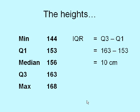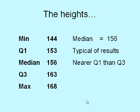The interquartile range is also easier to visualise — the range between the upper and lower quartile includes the middle half of your group, so you know that the middle half varies by 10 centimetres. The median of 156 is a good typical result, but notice how it's much nearer to the first quartile than to the third quartile — that tells you something about the shape of the distribution of the heights.